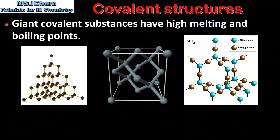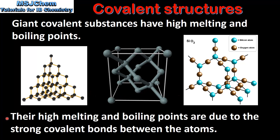Giant covalent substances have high melting and high boiling points. Their high melting and boiling points are due to the strong covalent bonds between the atoms.